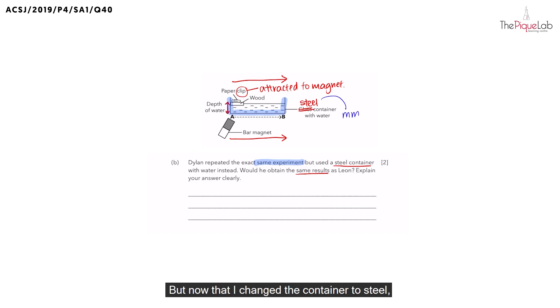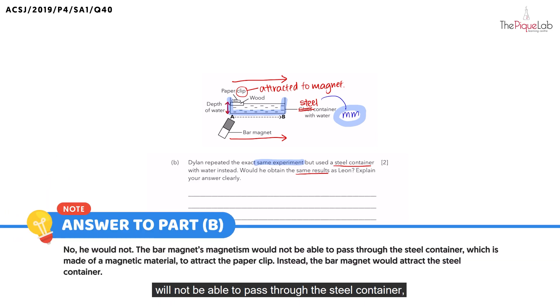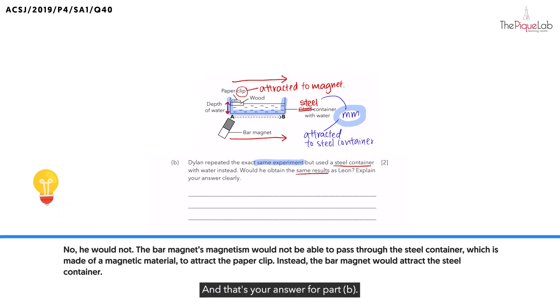But now that I changed the container to steel, we already said that steel was a magnetic material. So this means that the bar magnet's magnetism will not be able to pass through the steel container. Now instead, what do you think would happen? The bar magnet will actually be attracted to the steel container. And you will not observe any similar results that Leon achieved earlier, because the paperclip will not get attracted. And that's your answer for part B.